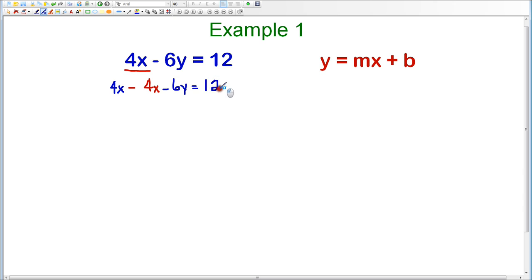So on the right-hand side, I already have 12, but remember to keep my equation balanced, I have to subtract 4X from the right-hand side as well. So notice that in red, I subtracted 4X from the left because that's where I want to get rid of it, but I also have to subtract 4X from the right to keep the equation balanced.